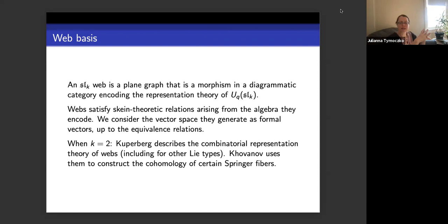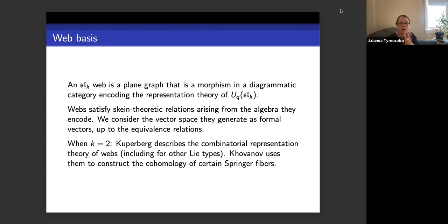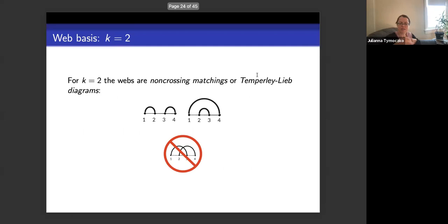We can forget webs come from algebra and just ask how many webs there are, what are nice bases, what are representations of equivalence classes under skein theory, and so on. On one hand you get a lot of webs forming equivalence classes under skein-theoretic relations; we consider the vector space generated by webs as formal vectors, and we generally have specific nice webs as representatives of equivalence classes. When k equals 2, Kuperberg has a complete description of the combinatorial representation theory of webs, and Khovanov used them to construct the cohomology of certain Springer fibers.